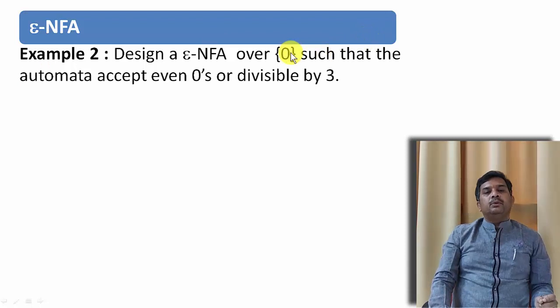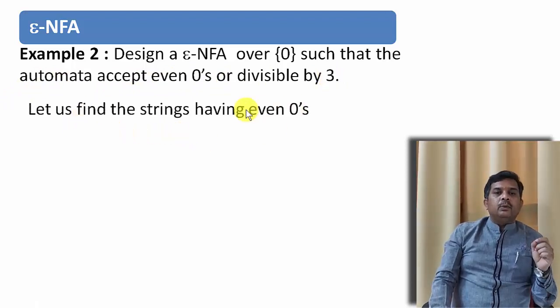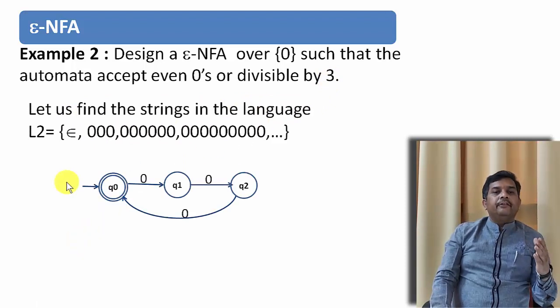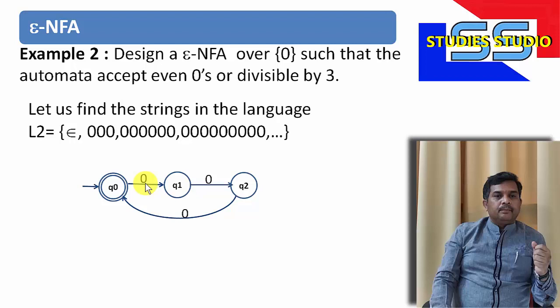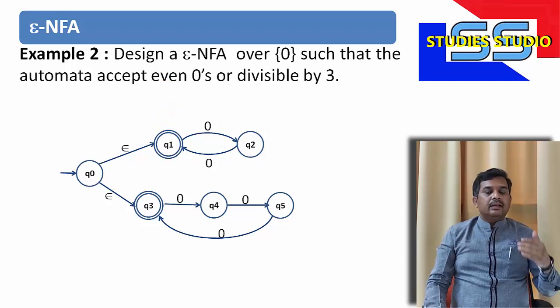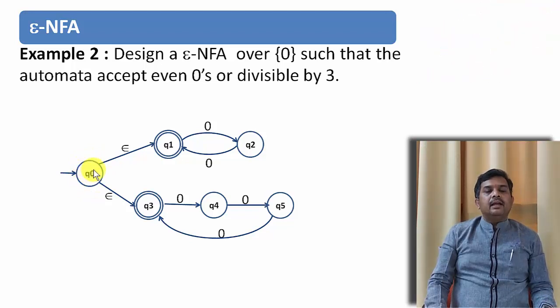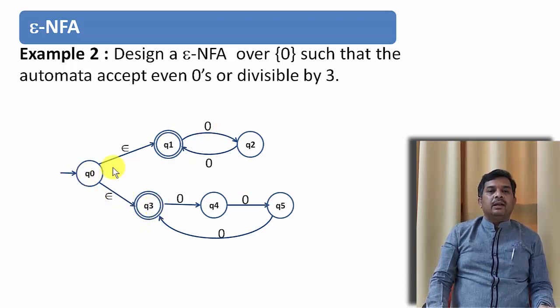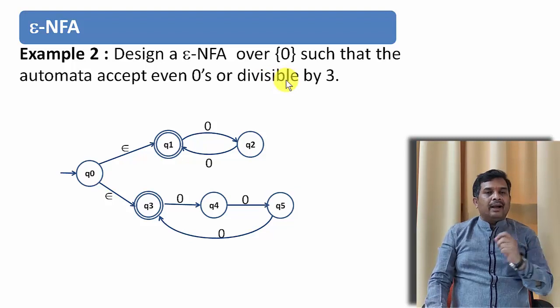Let us design one more epsilon-NFA. Over 0, only one input symbol is given, that will accept even number of 0s or number of 0s supposed to be divisible by 3. We have already seen this kind of problem. So an NFA with even number of 0s will look like this. An NFA with number of 0 divisible by 3 will look like this. We have already seen this problem. So this is the epsilon-NFA that we will get for this particular problem. Now let us combine these two NFA that we got. We have taken another state Q0 and from here we have taken an epsilon move to Q1 and another epsilon move to Q3. And this becomes an epsilon-NFA that accepts even number of 0s or number of 0s divisible by 3. I hope you understood both the problems.